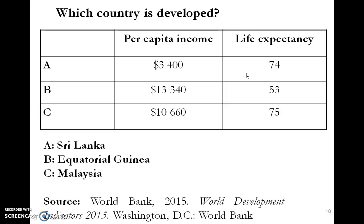Let's move beyond money metric measures. Since we've already said that development economics goes beyond just looking at economic growth, let's look at other structural issues — perhaps pertaining to health indicators. If you look at this table here with three countries and two indicators — per capita income and life expectancy — which country do you think is developed? Maybe you think this is a trick question. Go back to how we define economic development: we don't care simply about money metric measures.